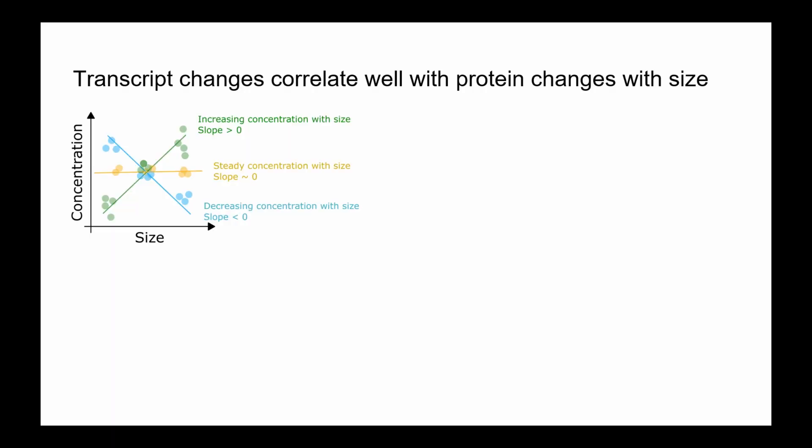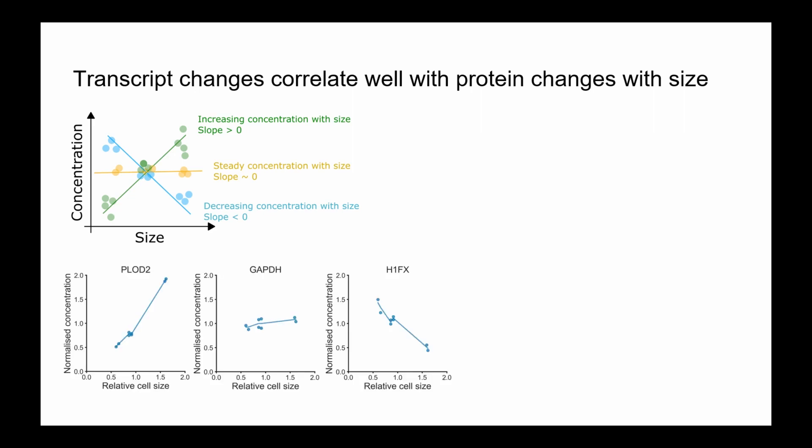We then wanted to look at how transcript changes can explain protein changes, so we ran RNA-seq at these different cell sizes. We have three cell sizes: small and large from induction, plus a medium-sized control from DMSO treatment. We can plot transcript concentration changes at these different sizes, and at the global level the RNA slope is skewed slightly to the left of zero, potentially reflecting some moderate slowdown in cell growth as cell size increases.